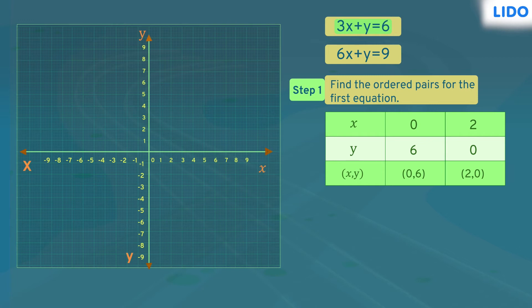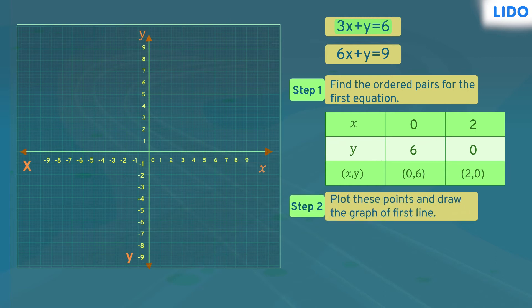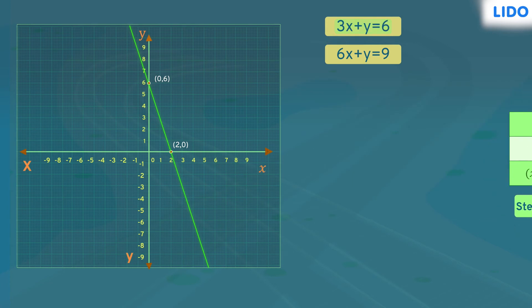Now we have ordered pairs for our first equation and we can plot the line using these points. The first point is (0,6) and the second point is (2,0). Let's connect these points using a line. So we have the graph of the first equation.